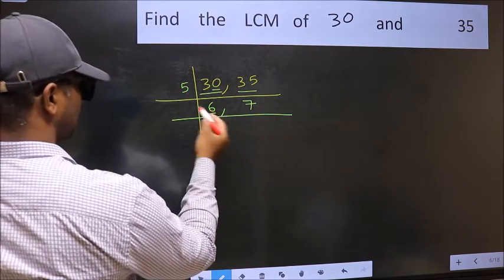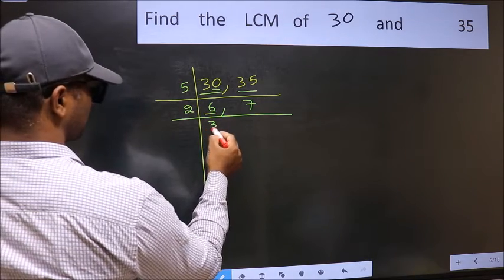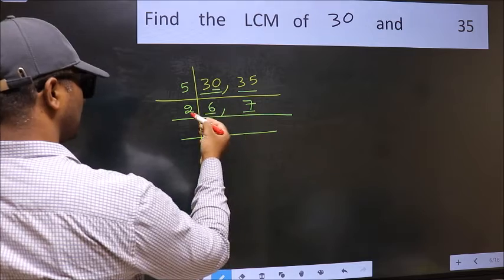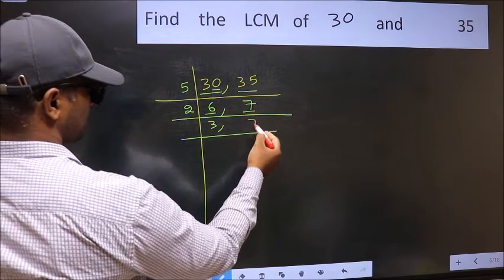Now here we have 6. 6 is 2 times 3. The other number, 7, is not divisible by 2, so you write it down as it is.